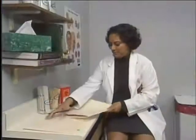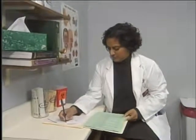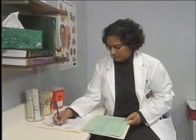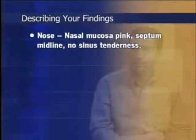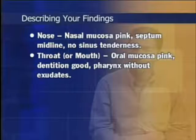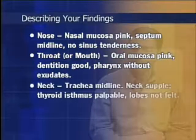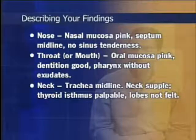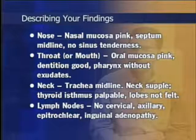A clear, well-organized clinical record employing language that is neutral, professional, and succinct is one of the most important adjuncts to patient care. For a healthy patient, your write-up might include: Nose — nasal mucosa pink, septum midline, no sinus tenderness. Throat/mouth — oral mucosa pink, dentition good, pharynx without exudates. Neck — trachea midline, neck supple, thyroid isthmus palpable, lobes not felt. Lymph nodes — no cervical, axillary, epitrochlear, or inguinal adenopathy.